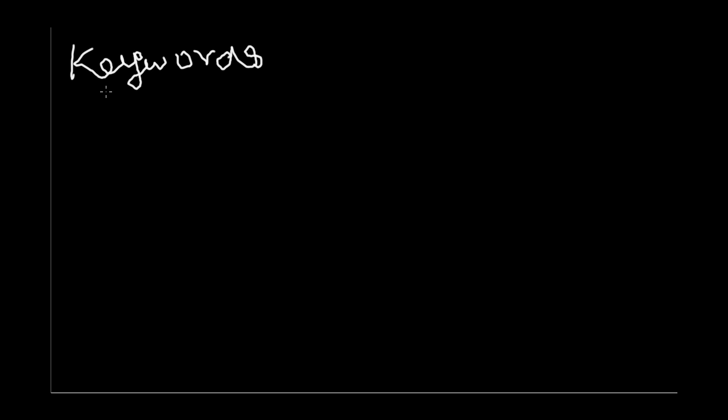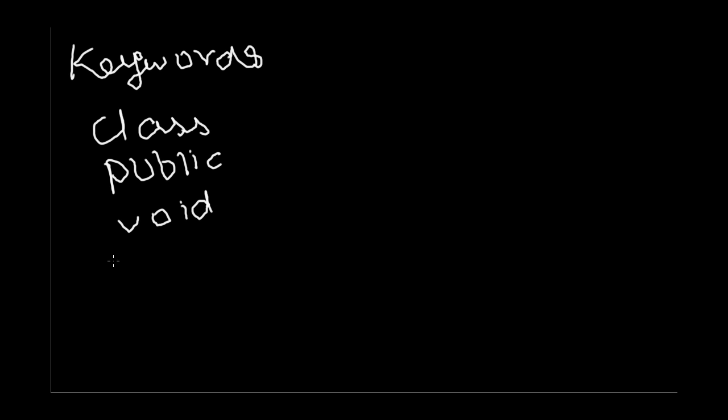This is my third Java tutorial and in this tutorial I am going to go into words in Java — what kind of words are there. In a programming language, like a real language, it has to have words. In Java you have something called keywords, which are words that have already been defined in Java. For example, the word 'class' is a keyword, the word 'public' is a keyword, the word 'void' is a keyword, and the word 'if' is a keyword.